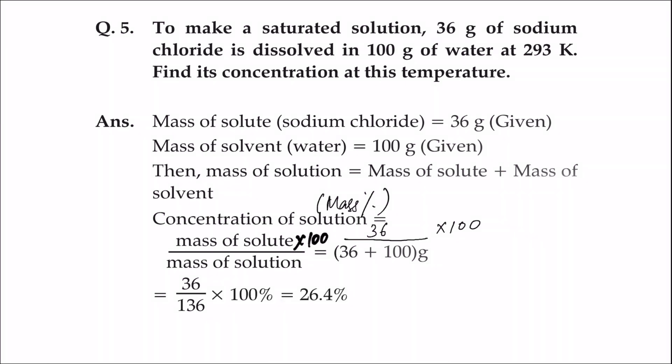To make a saturated solution, 36 grams of sodium chloride is dissolved in 100 grams of water at 293 Kelvin. Find its concentration at this temperature.